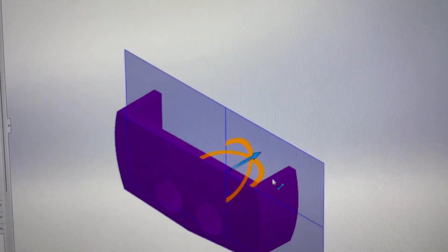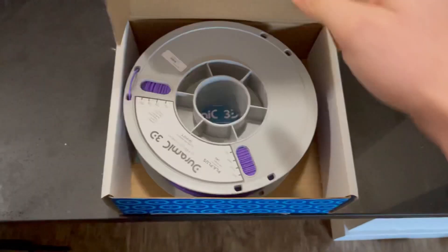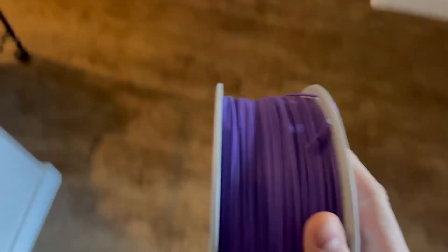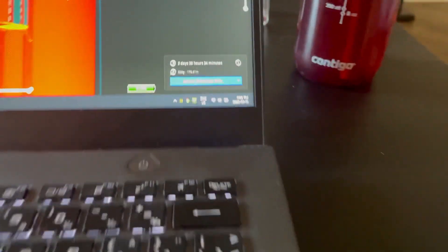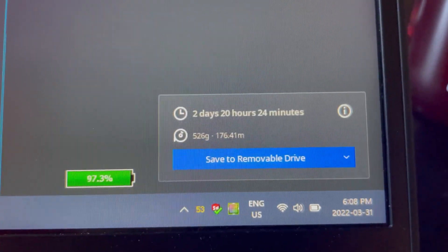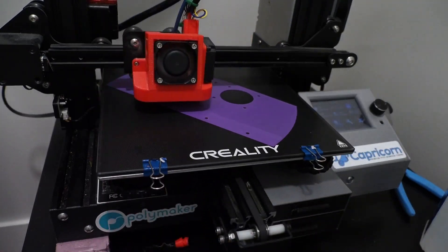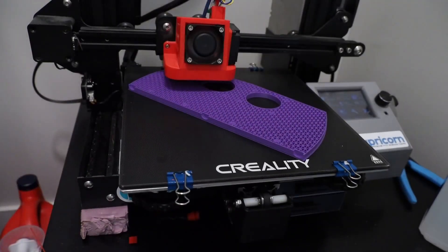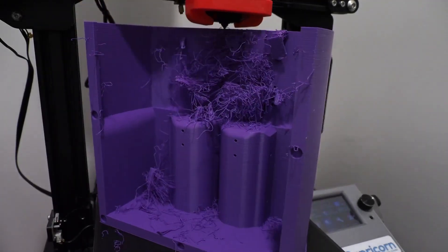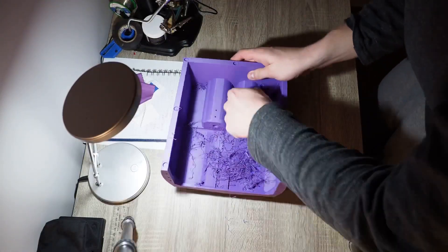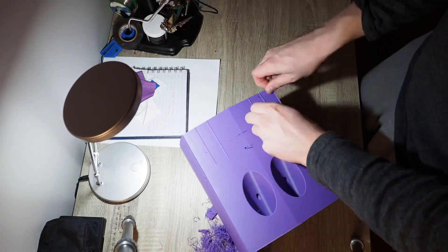This also let me fix a few things like inefficiencies in material use and thin walls. So two days and 20 hours of printing later, I had a kind of messy 3D print of the third shell, but it had a much better inlet design.